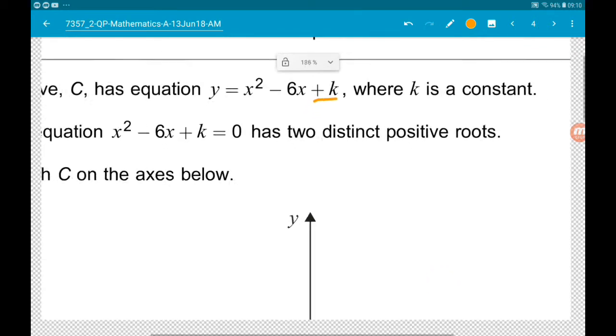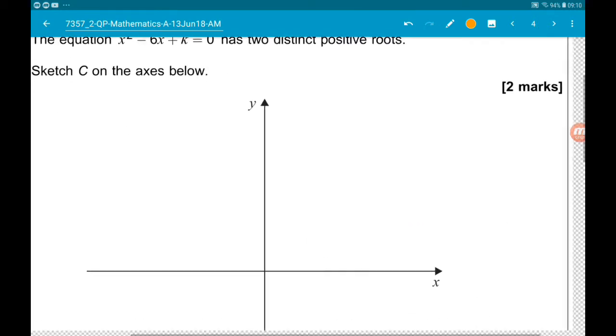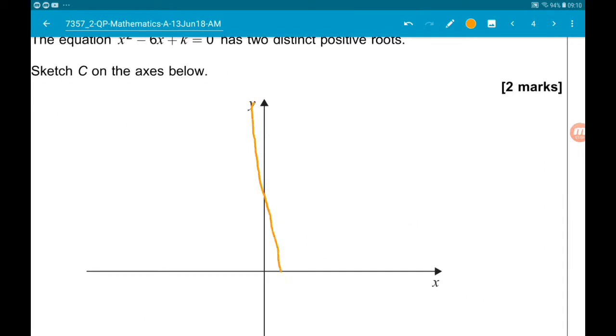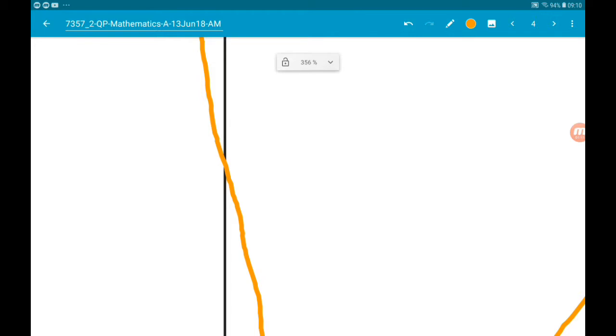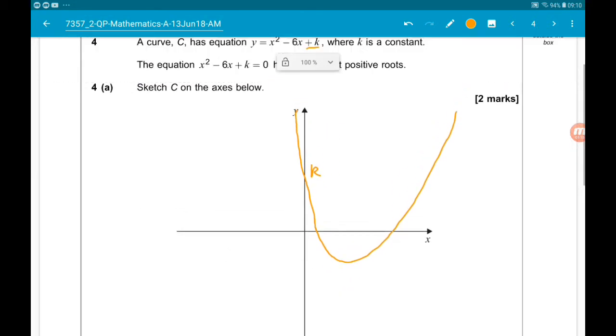So our graph is just going to look something like that, where the only thing that we can really label is the y-intercept, which is k.